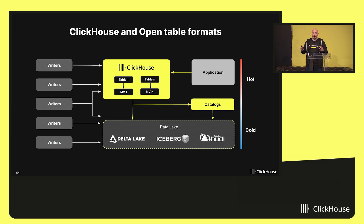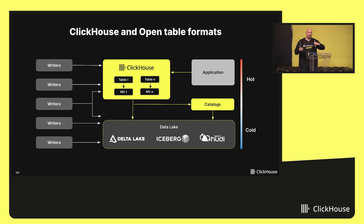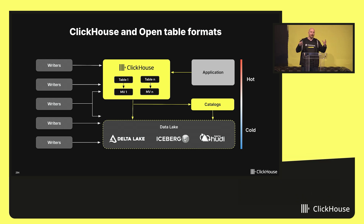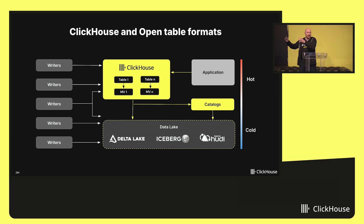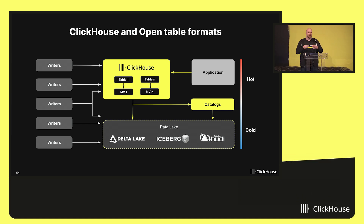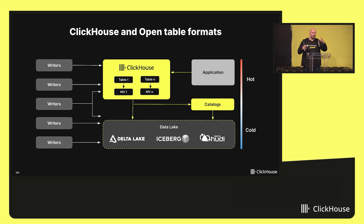Typically, the way they do it is with dual writes — they insert both into ClickHouse and into Iceberg with different TTL policies. If you need to query a short time frame, you use ClickHouse. If you need to query historical data, you use Iceberg. You can also reingest data from Iceberg into ClickHouse if needed, such as during an incident or a security audit. There's always a way to move data around.